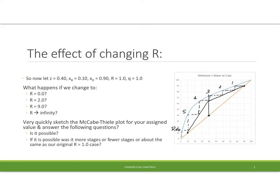Hello, this is Dr. Lukes. I'm still sick so again we have our TA helping run class today. What we're going to be looking at today is the effect of changing the reflux ratio R. We've been looking at this problem where our base case is Z, the feed, has a composition of 40% methanol. We want a bottoms product that's 10% methanol, distillate at 90%, and we've been using a reflux ratio of 1 and we started with a Q of 1, and last class we looked at varying the Q.